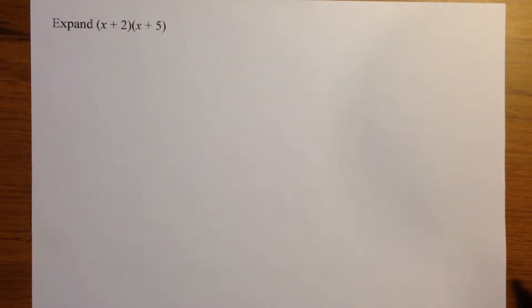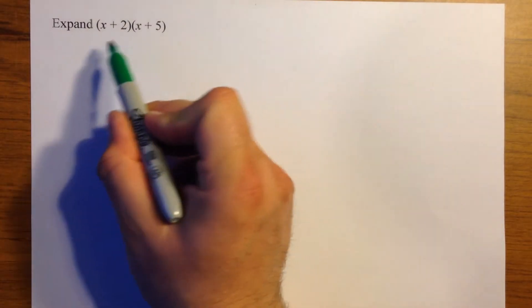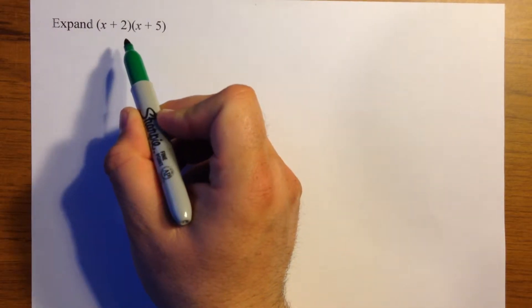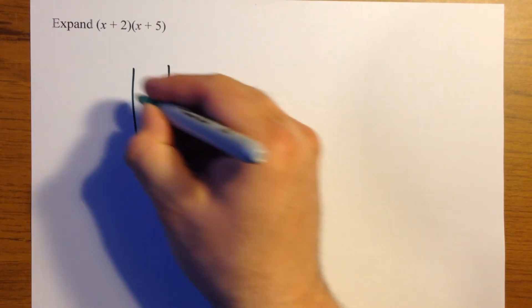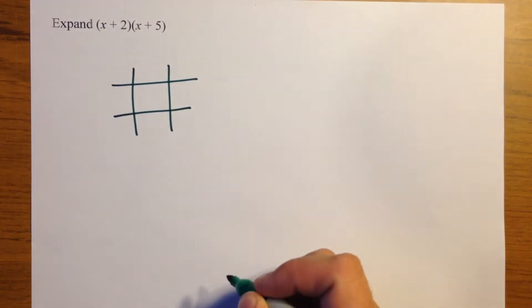OK, this is the first video in the series that's going to look at expanding brackets. This is probably the simplest double bracket you can expand, and the method we're going to use is the noughts and crosses grid.